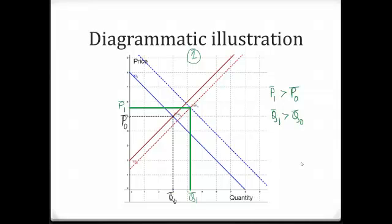This is the first of three diagrams that we will look at. In this diagram, the initial demand curve and the initial supply curve intersect at this point. This is the initial equilibrium price, P0 bar, and the initial equilibrium quantity, Q0 bar. Demand increases, reflected by the outward shift of the demand curve to the new demand curve shown in broken lines.